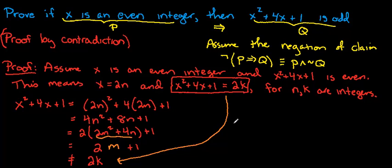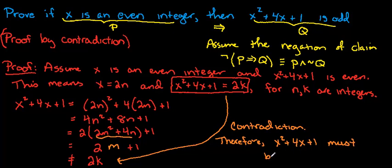And that's how a proof by contradiction works. You assume the negation of the claim, you work until you get a contradiction, and so our punchline, our conclusion is, therefore we conclude that x squared plus 4x plus 1 must be odd.